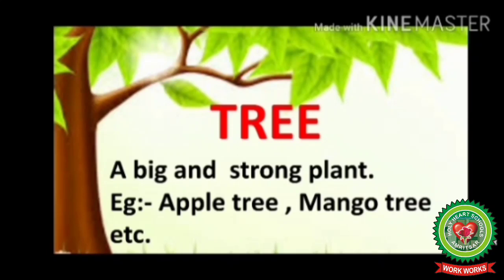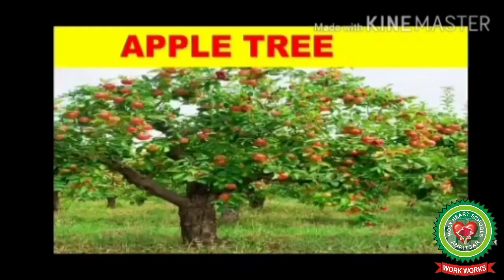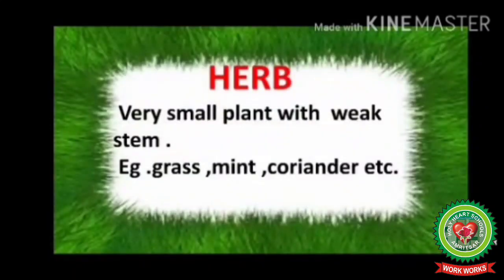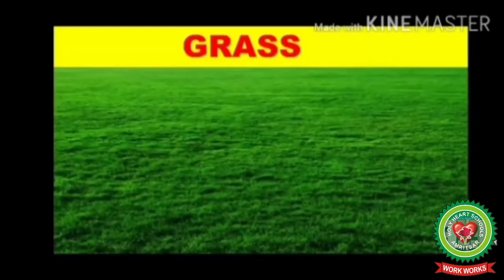Now let's go through the key terms of this chapter. Our first term is tree: a big and strong plant. For example, apple tree, mango tree. Our next term is herb: a very small plant with weak stem. Children, herbs are very small plants. They have weak or soft stems — we can break them easily. Example: grass.